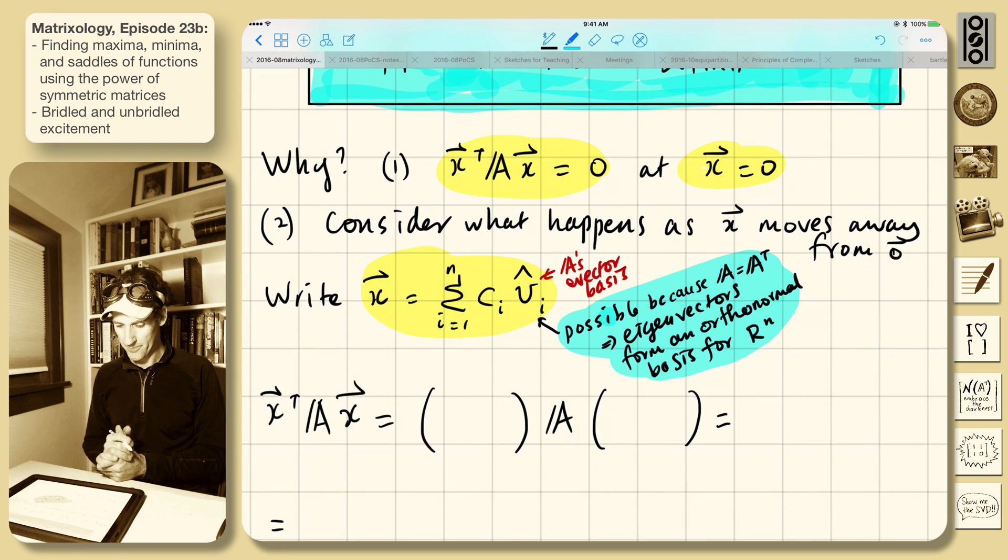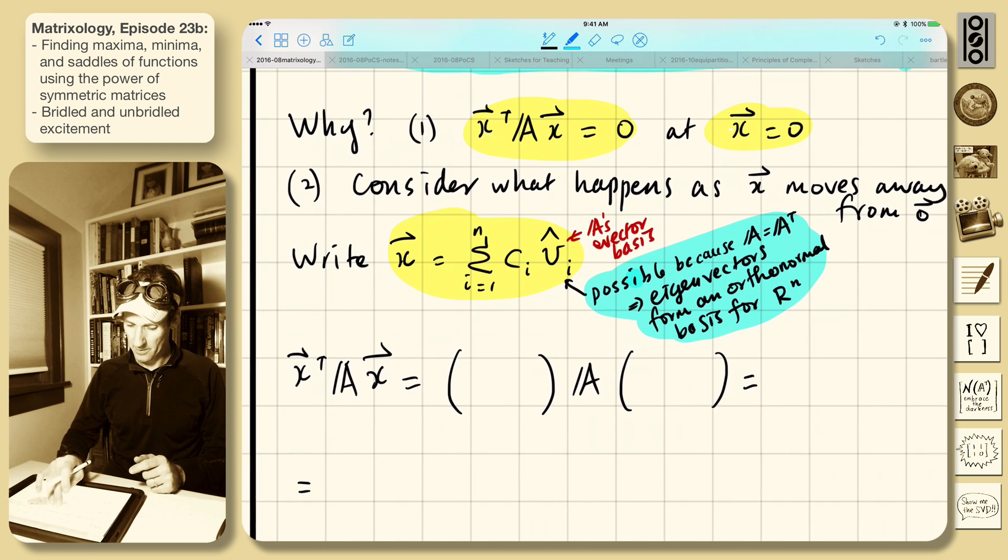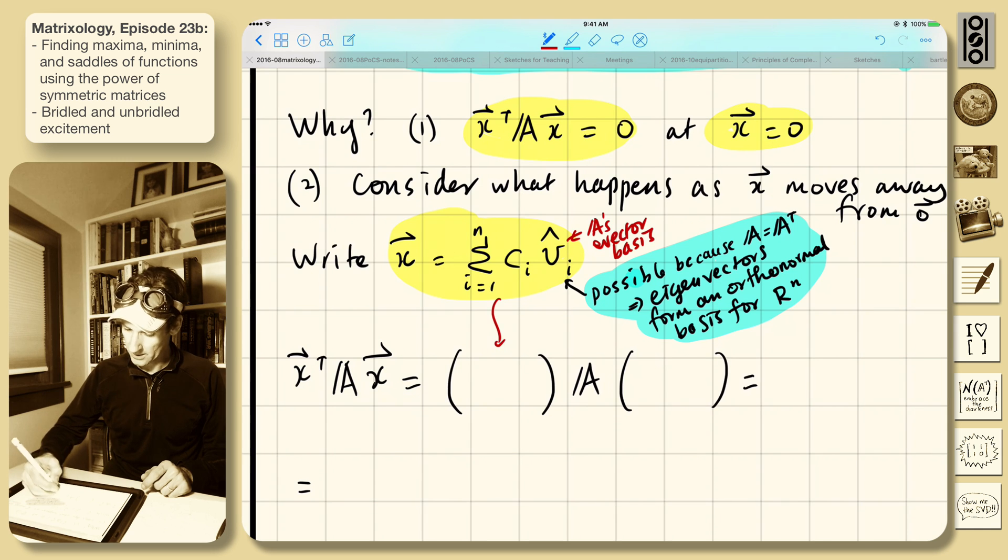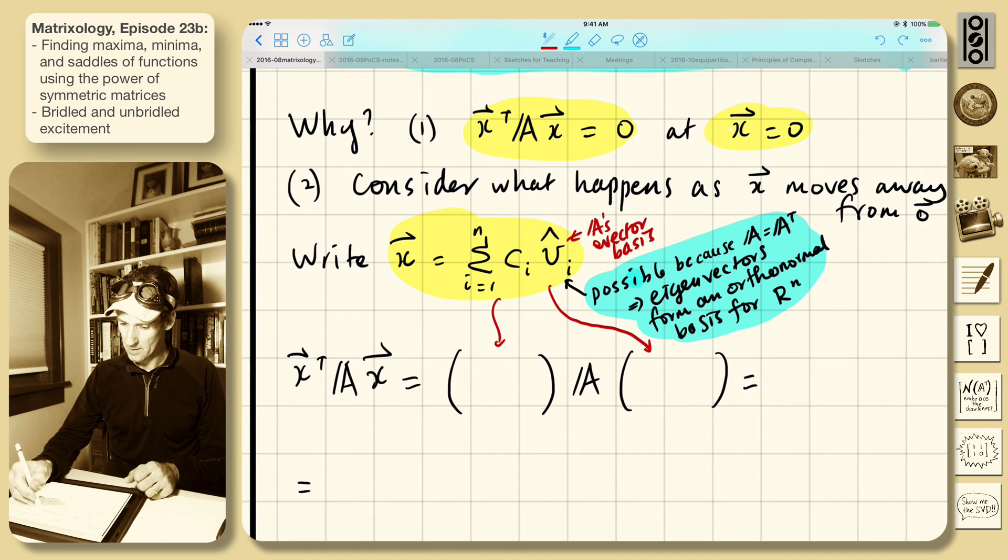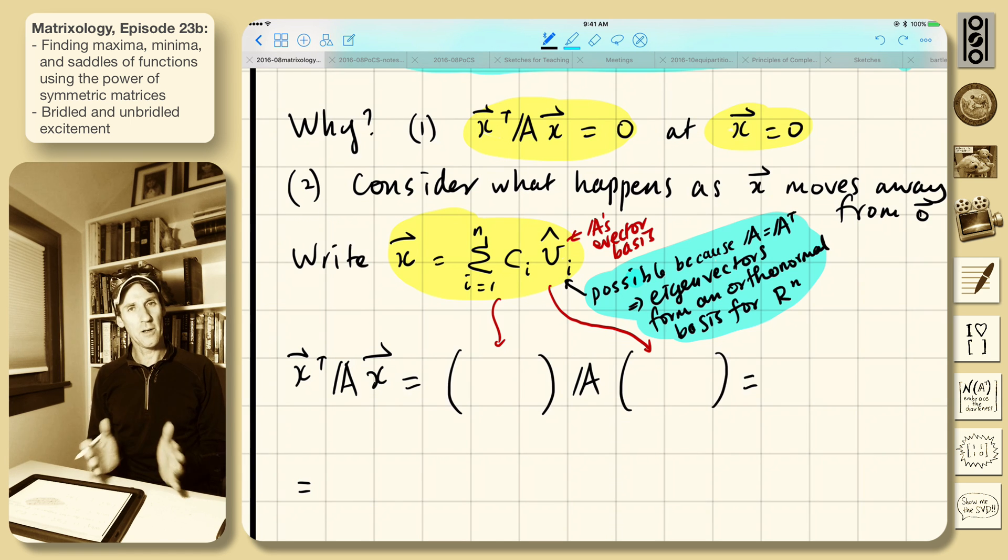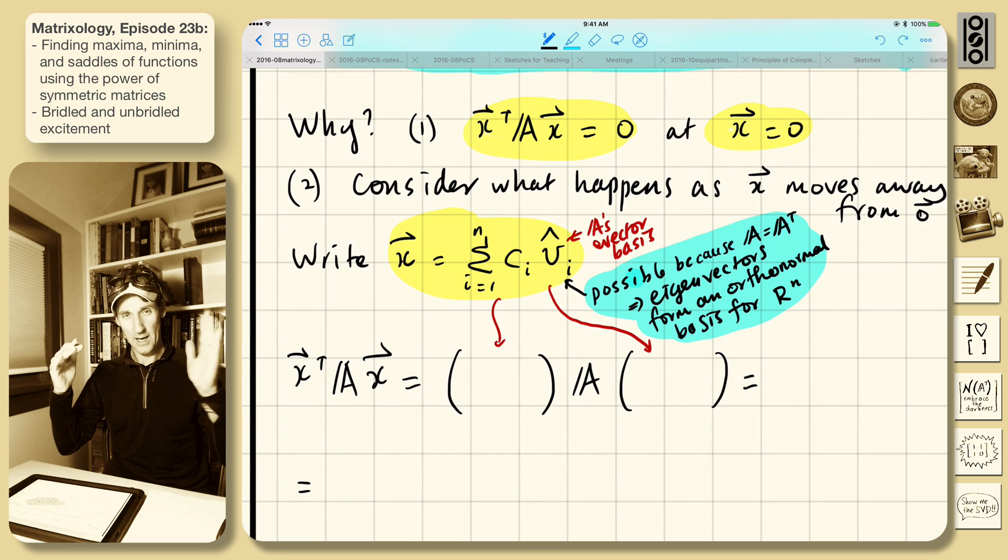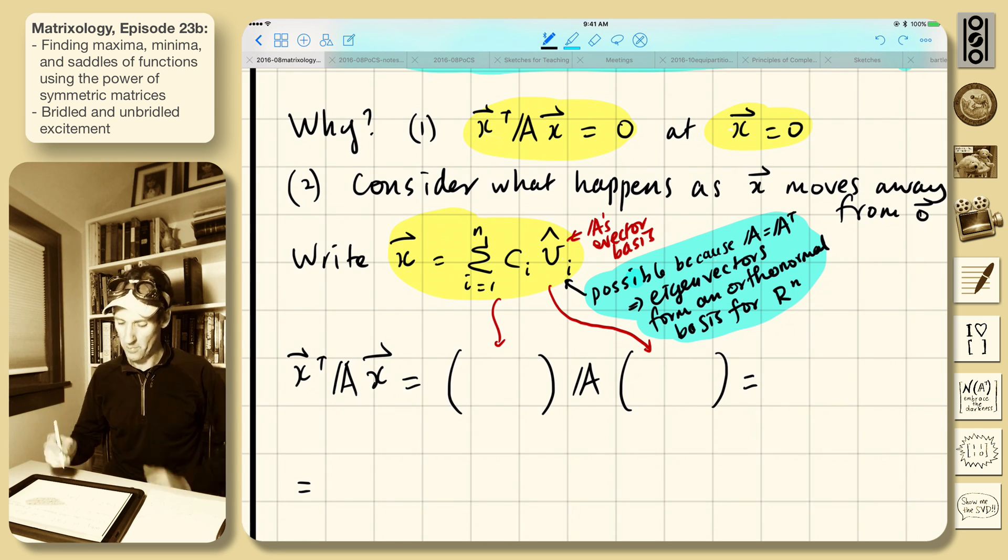And as X moves away from 0, so we start at 0 and then move X away, then we can do this. We can write X as a sum. Instead of using the normal standard basis, we write it in the eigenvector basis. This is A's eigenvector basis. And this is very important. This is possible because the eigenvectors, because A equals A transpose, the eigenvectors form an orthonormal basis. It's orthogonal, that's true, but we're kind of working on orthonormal. Always possible. So it's a basis. It's even better if it's orthonormal. That's optional, but it is a basis.